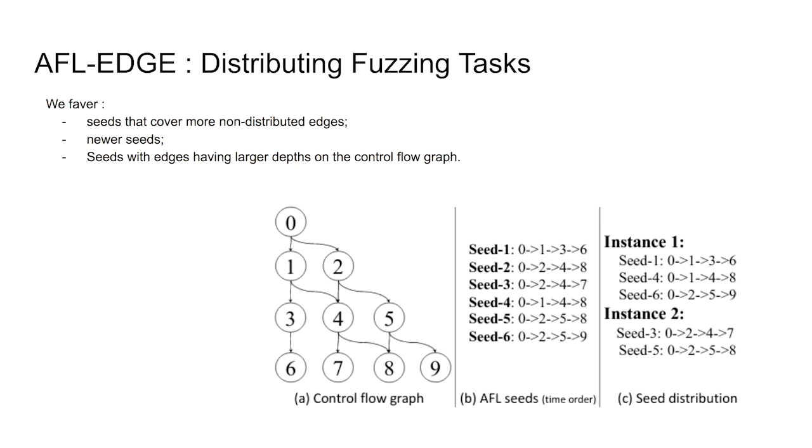This algorithm involves multiple heuristics which strive for fewer overlaps and better efficiency. First, we prefer the seed that covers more non-distributed edges. The motivation is to quickly consume the distribution space. The second one is we favor the newer seeds. The seeds newly generated have a higher chance to cover new edges than the older ones. The third one is we favor the edges that have larger depth on the CFG. This is to reduce the search space when picking the seeds, because as we observed, the deeper edges are typically reached by fewer seeds.